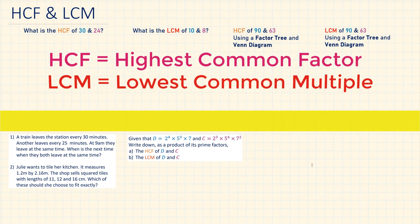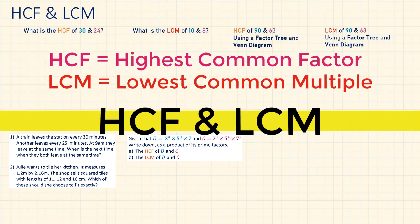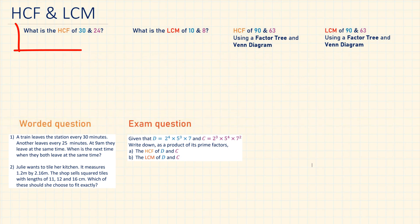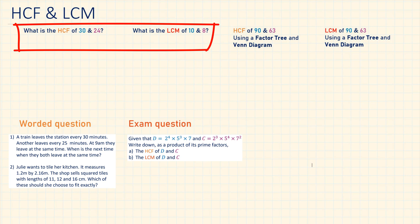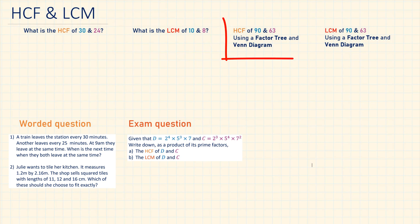Highest common factor and lowest common multiple — HCF and LCM. The first two questions will be a simple introduction to HCF and LCM using perhaps one of the simplest methods out there. This method is very suitable when we have small numbers. We will solve the next two questions with the help of a Venn diagram — use this method when you have larger numbers. It's perfect for it.